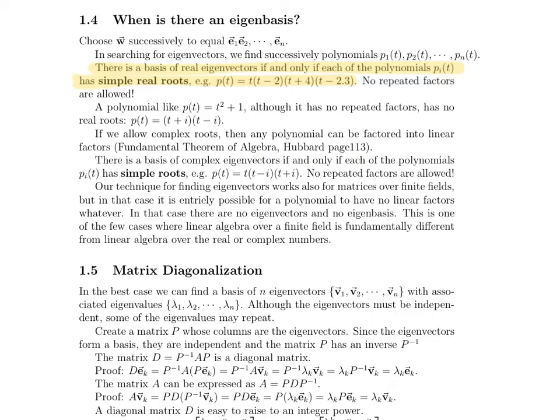So occasionally, you do care whether or not you can get a basis of complex eigenvectors. It depends on the application. But in this case, there is a basis of complex eigenvectors if and only if each of the polynomials has simple roots. It doesn't matter that they're simple and real, just simple is fine. So basically, what we're looking for is there are just no repeated factors. And here's an example of that. One thing to note is that our technique that we use for finding these eigenvectors for matrices also works for matrices over finite fields. But it's also entirely possible for the polynomials that we get to not have any linear factors. So in that particular case, there would be no eigenvectors and no eigenbasis for a matrix.